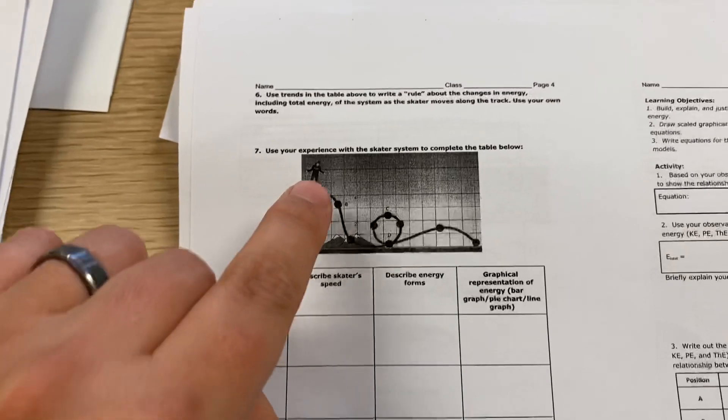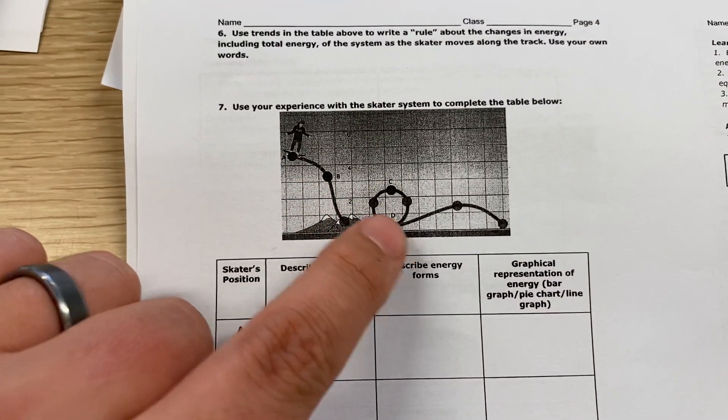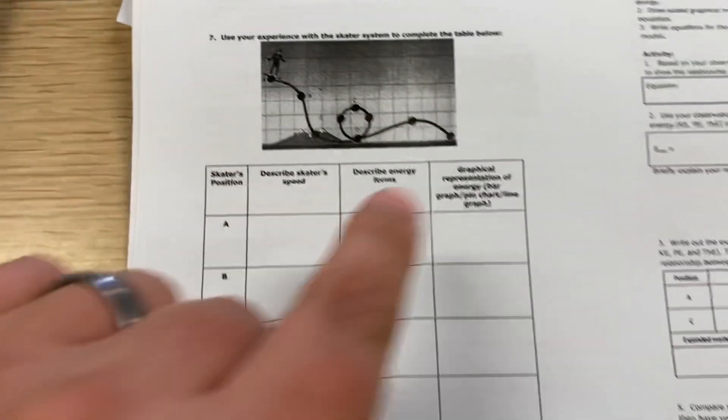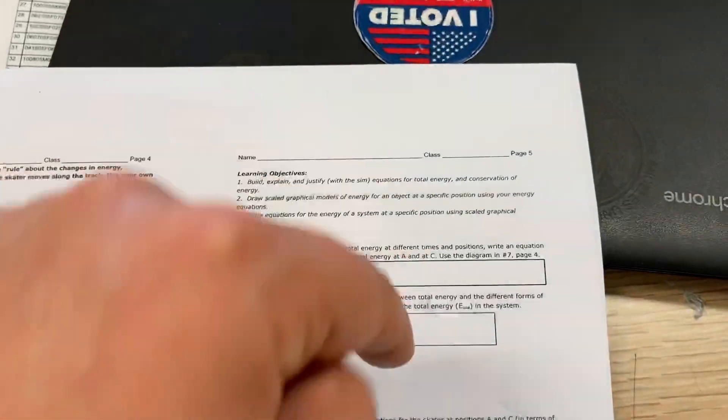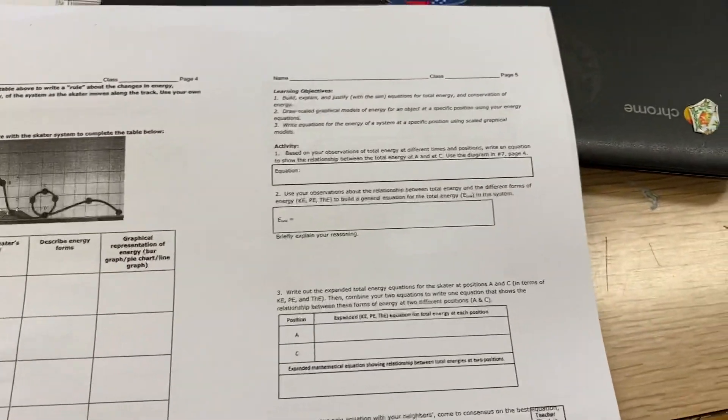And then at the varying points, we've got point A, B, C, and D. So it goes like this: C, then D. You gotta describe all these things, and then you should start page five and answer as many of these questions as you can. We're going to work on this on Thursday.